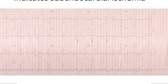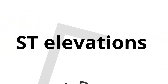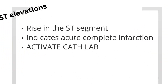In identifying ST depression, always compare to the subsequent T-to-P baseline — that segment between the end of the T wave and beginning of the P wave. Now, let's talk about the most important finding in EKG: ST elevations. ST elevations are a rise in the ST segment and indicate an acute complete infarction. When you see an ST elevation, you need to activate a cath lab immediately.